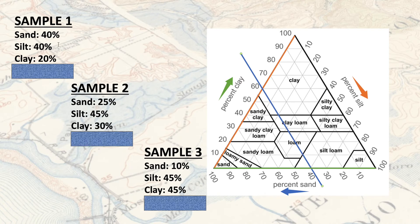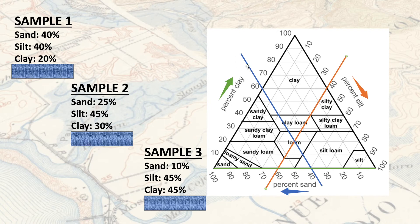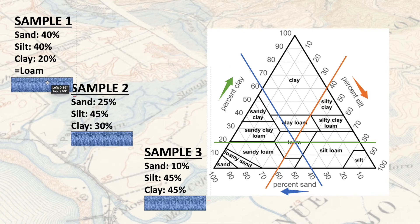The next percentage is silt at 40%. Silt is orange, so I grab my orange line and drag it over until it intersects at the 40 line. Notice how the blue and orange lines are now intersecting at one spot. Our last percentage is clay at 20% — 0, 10, 20. Clay is horizontal, so I bring my line up. All three lines intersect on one point, which means this sample one is identified as a loam.